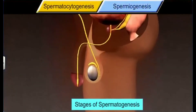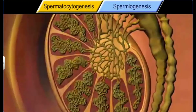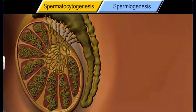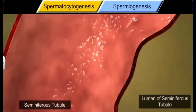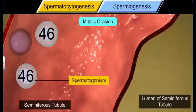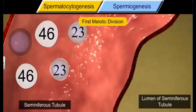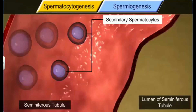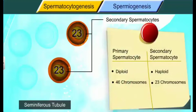Spermatocytogenesis, the first stage, occurs in the seminiferous tubules whose inner walls are lined with spermatogonia — the diploid male germ cells containing 46 chromosomes. Some of these spermatogonia divide mitotically to form two daughter cells, but one remains the spermatogonia while the other becomes a primary spermatocyte. This primary spermatocyte divides meiotically to form two equal cells called secondary spermatocytes, which are haploid cells containing 23 chromosomes each.